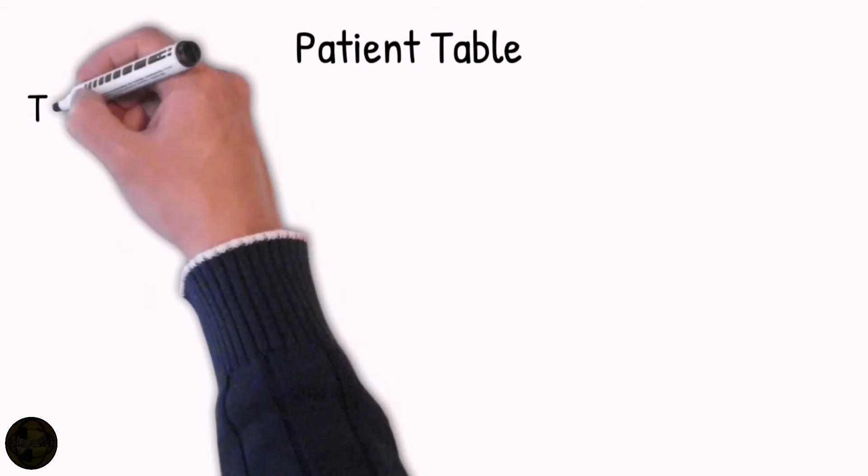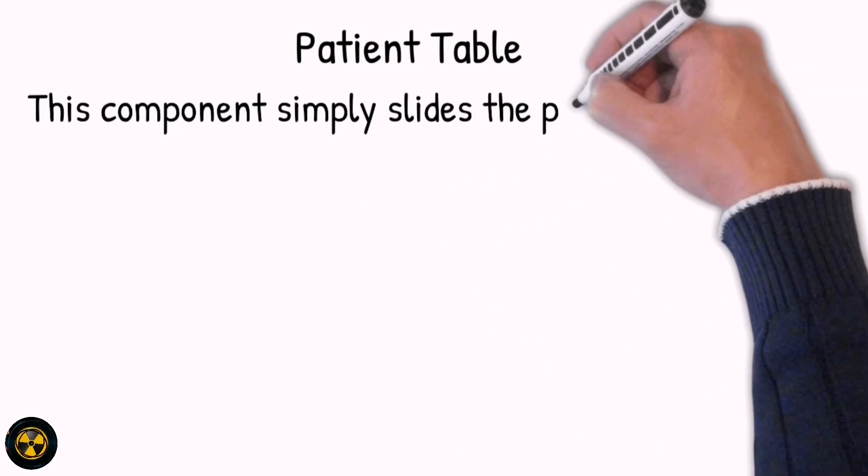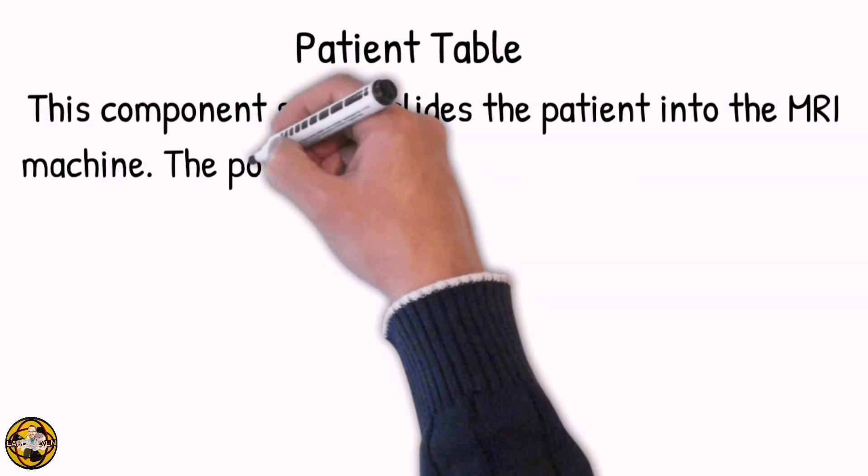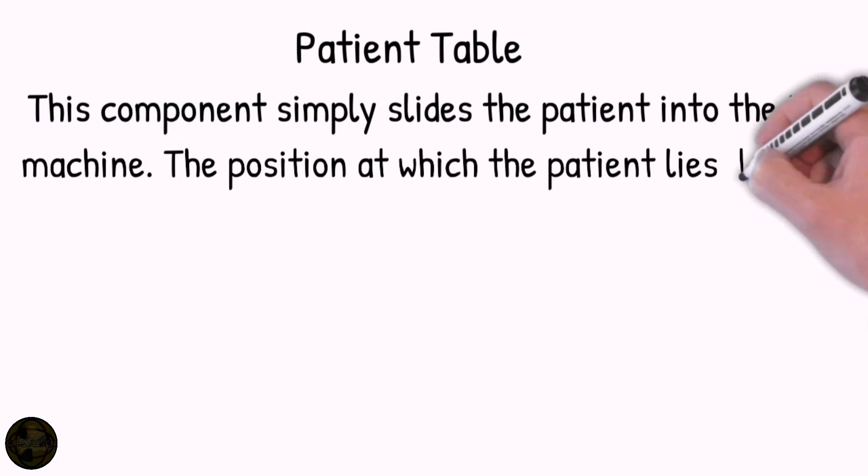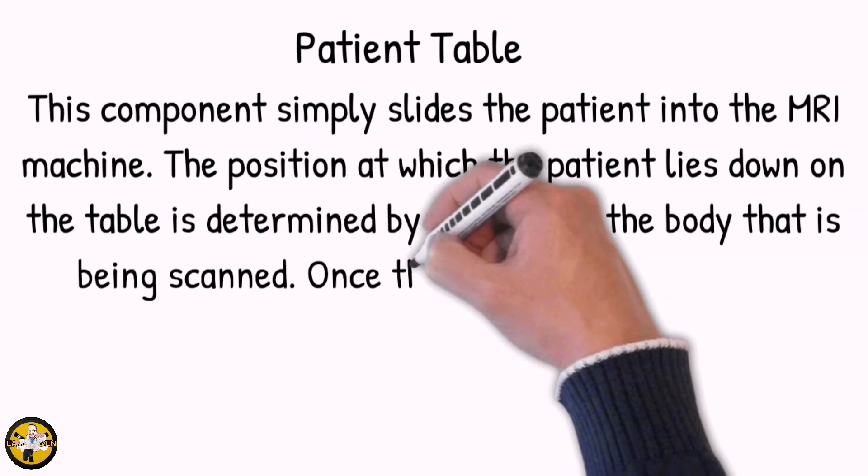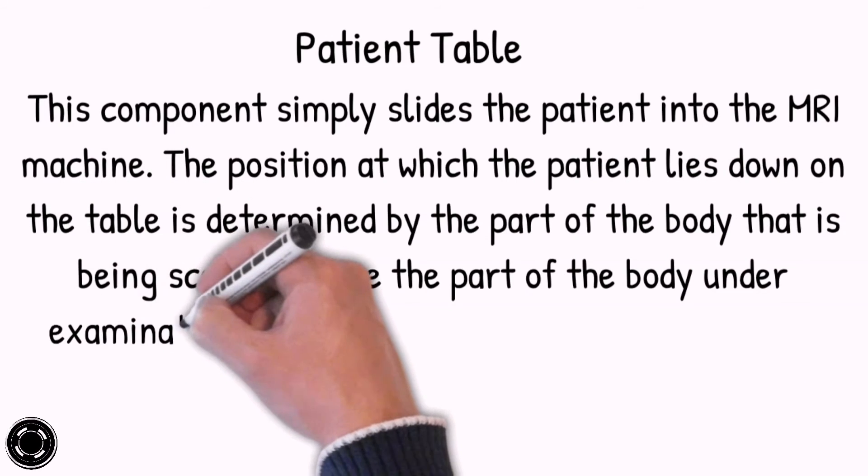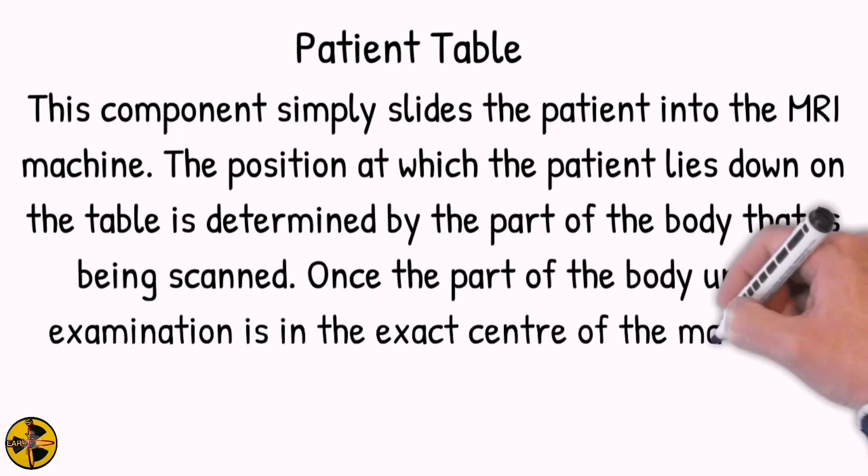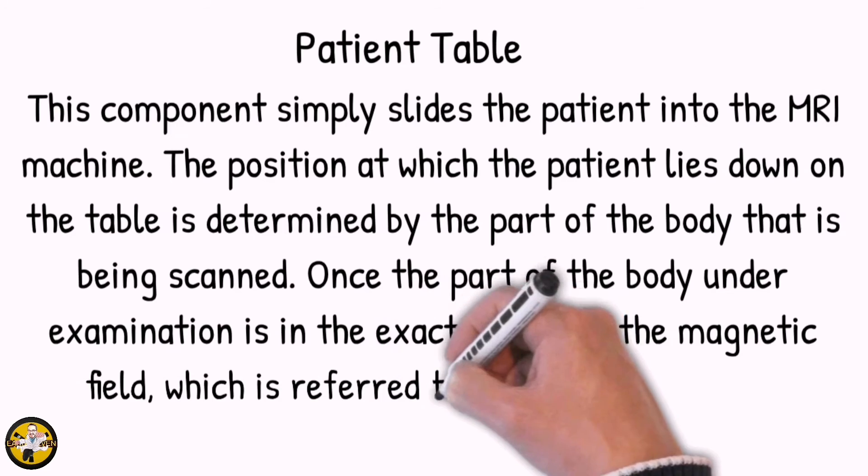Another component is the patient table. This component simply slides the patient into the MRI machine. The position at which the patient lies down on the table is determined by the part of the body that is being scanned. Once the part of the body under examination is in the exact center of the magnetic field, which is referred to as the isocenter, the scanning process is started.